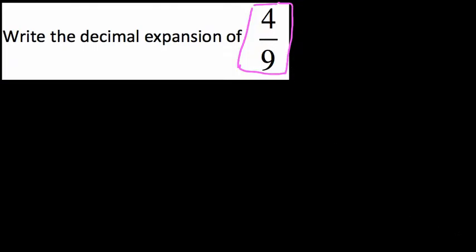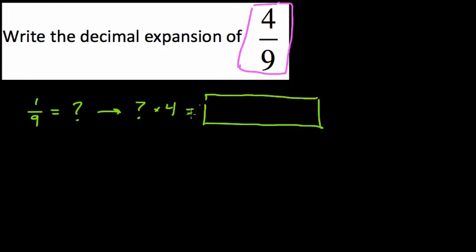So what I'm going to do is find 1 ninth, that's going to equal some decimal, and then take that result and multiply that by 4, and that will equal our decimal expansion. And that's one way to do it. Another way to do it is just to take 4 and divide that by 9. I'm going to take this approach because there's a nice pattern to build off with the ninths, and I think that becomes more obvious when we find 1 ninth first.